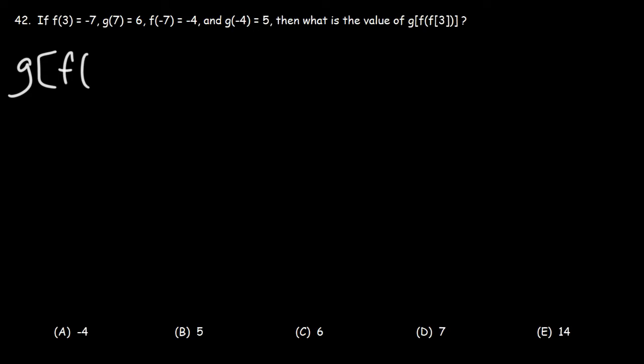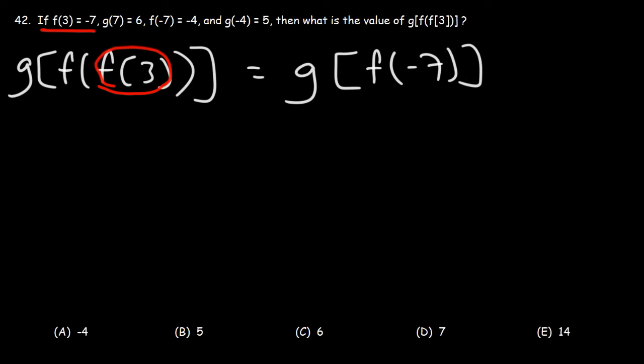So let's start by writing this function. First, let's evaluate f(3). We're told that f(3) is negative 7. So let's replace what we have here with negative 7. So this becomes g(f(negative 7)). Now, we know that f(negative 7) is negative 4. So this becomes g(negative 4). And we can see that g(negative 4) is 5. And so this right here is the answer.